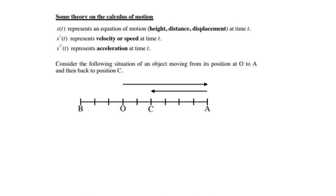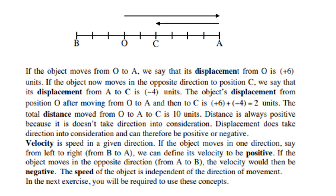Consider the following situation of an object moving from its position at O to A, and then back to position C. If the object moves from O to A, we say that its displacement from O is 6 units, or plus 6, because plus means moving from left to right.